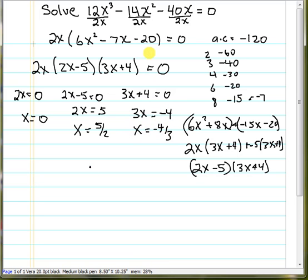So our solutions for the original problem are x equals zero, positive five halves, and negative four thirds.